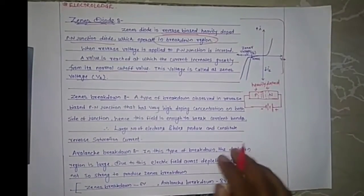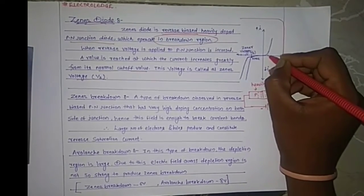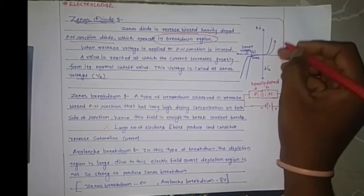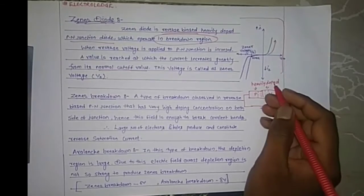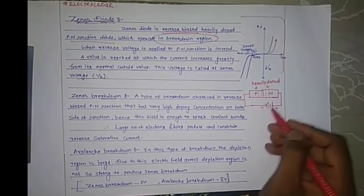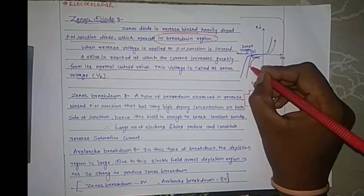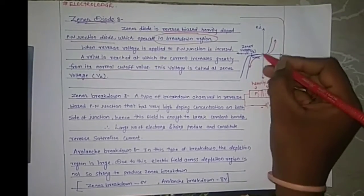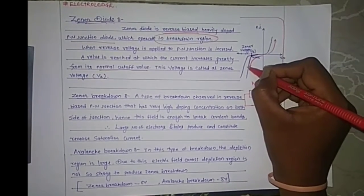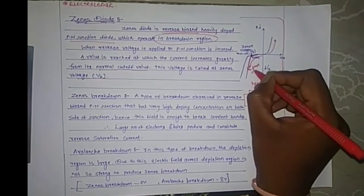Let's move to the VI characteristics of the Zener diode. When the diode is connected in forward bias, the slope behaves normally as a forward biased diode. In reverse bias, the curve goes toward the negative terminal, and the region from the knee point where the slope goes down is known as the breakdown region.